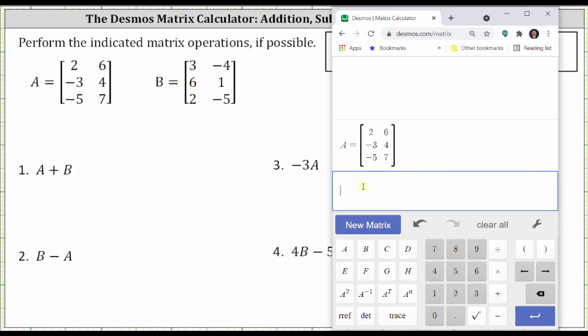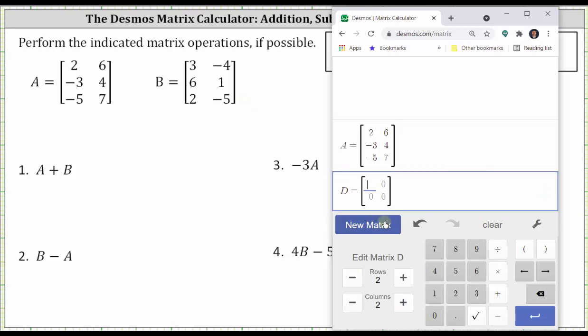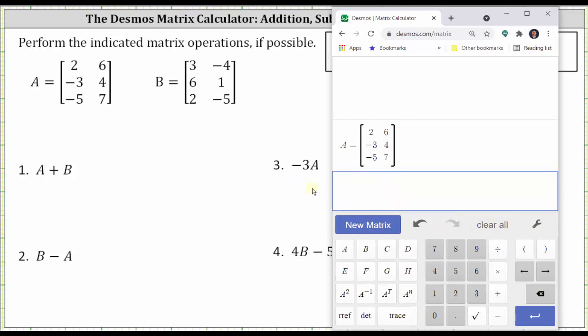Again, by default, the matrices are assigned capital letters in alphabetical order. If we did want to assign a matrix to a particular variable, we would enter the variable first. For example, D, then click New Matrix, and we can enter a matrix identified by capital D. Let's go ahead and clear this. And if I press New Matrix, it automatically assigns matrix B, because B comes after A.